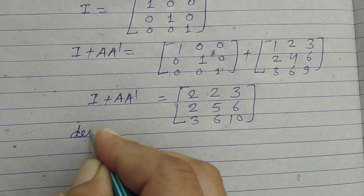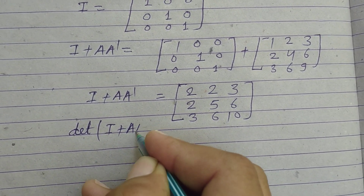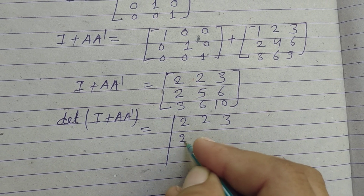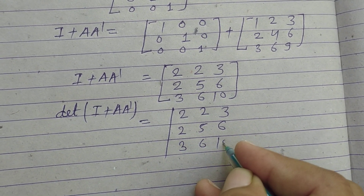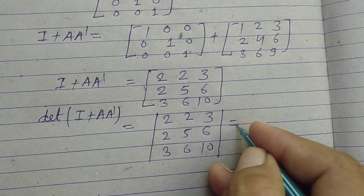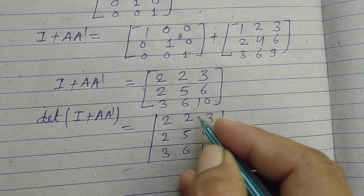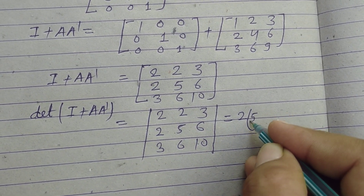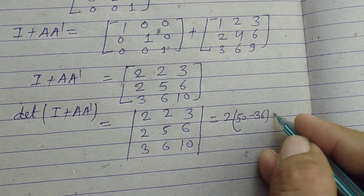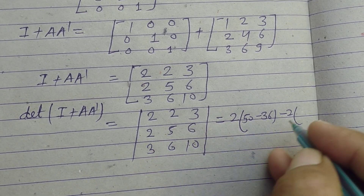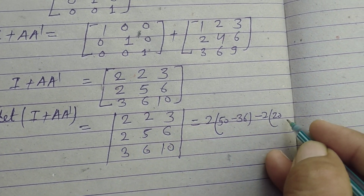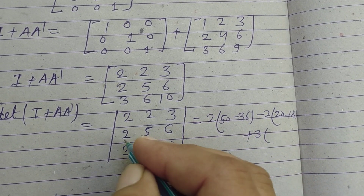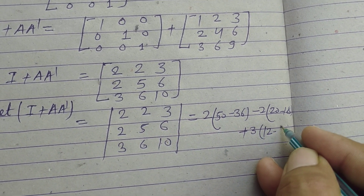Now the determinant of I plus AA dash equals the determinant of the matrix [2,2,3 / 2,5,6 / 3,6,10]. Opening this determinant along R1: 2 times (5×10 − 6×6), minus 2 times (2×10 − 6×3), plus 3 times (2×6 − 5×3). That gives 2(50 − 36) − 2(20 − 18) + 3(12 − 15).